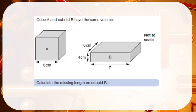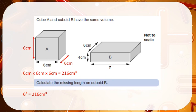Looking at the next question: cube A and cuboid B have the same volume. The first thing I would do is deal with what we know about shape A. Because it is a cube, we have 6 as our length, we will also have 6 as our height, and because it's a cube going backwards we will also have a depth of 6. So to find the volume of A I would do 6 times 6 times 6, which gives me the answer of 216cm cubed.